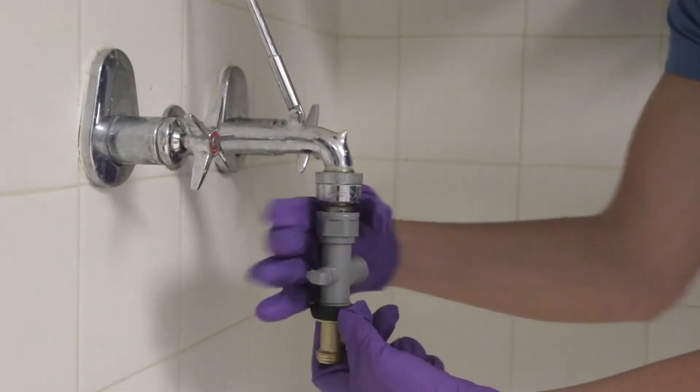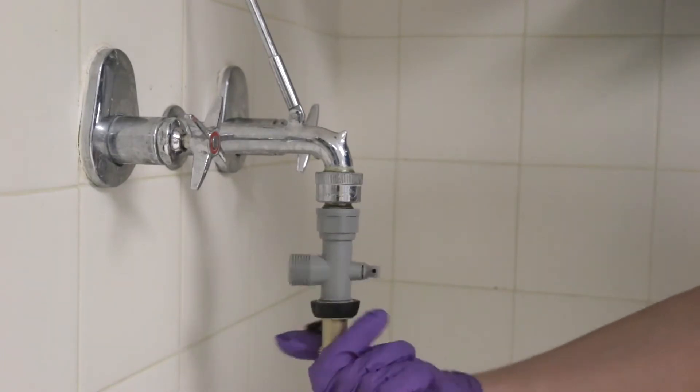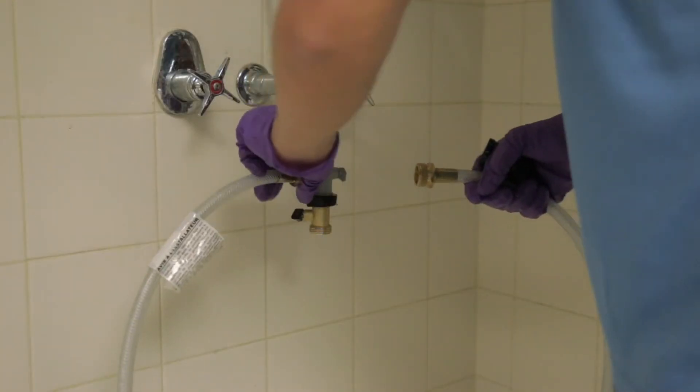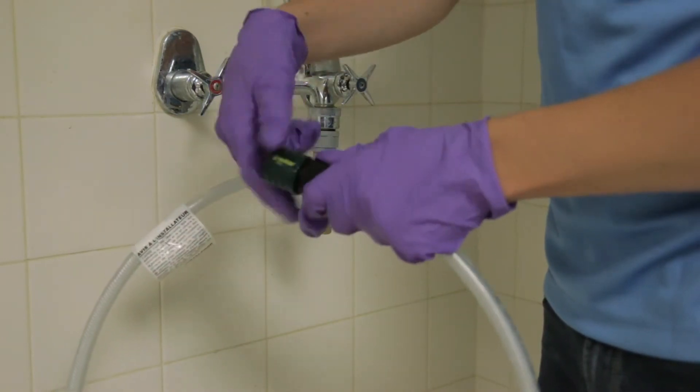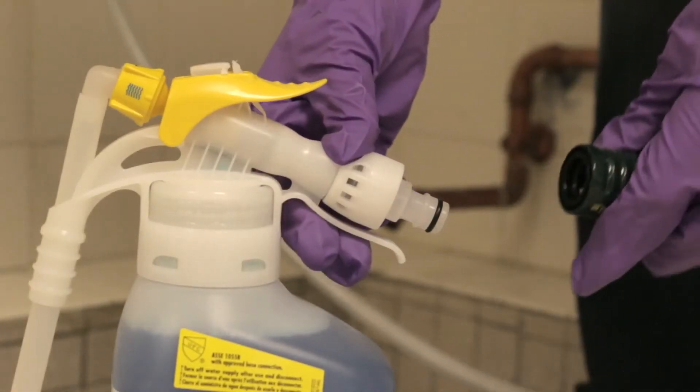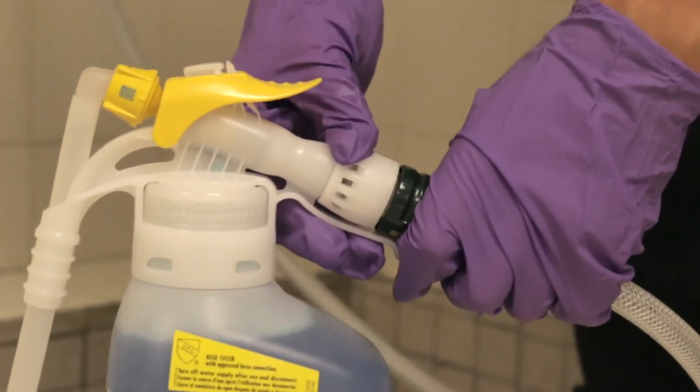To get started, connect the flow-through valve to the water supply. Next, attach the hose to the flow-through valve. Then, screw the quick connect to the other end of the hose. Finally, attach the quick connect to the RTD unit.